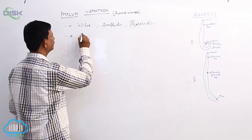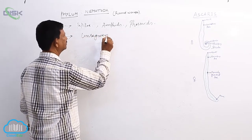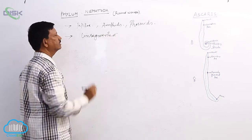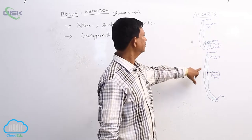Its body is unsegmented. Unsegmented body is present - body is not divided into segments. You can see this Ascaris lumbricoides, here body is not divided.